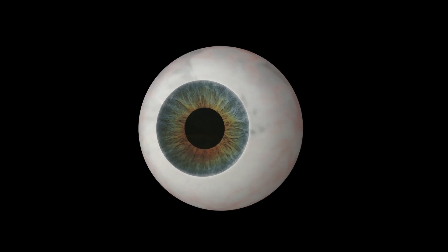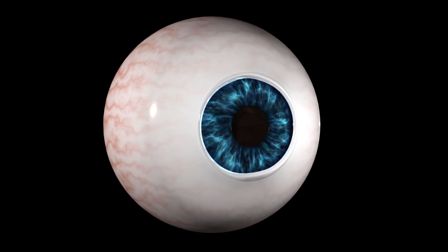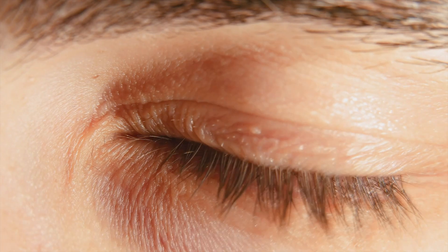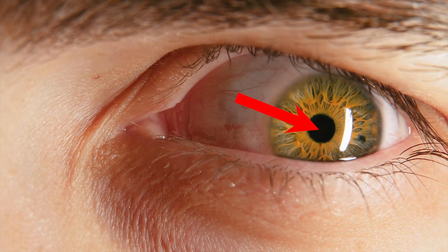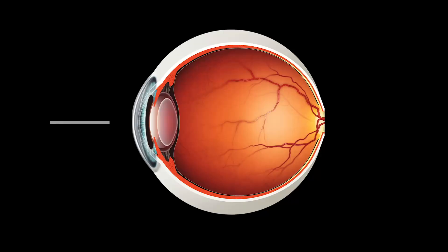Iris is circular in shape and contains pigments. These pigments impart color to the iris. There is an aperture present in the center of the iris called the pupil. Light rays enter the eye through the pupil.